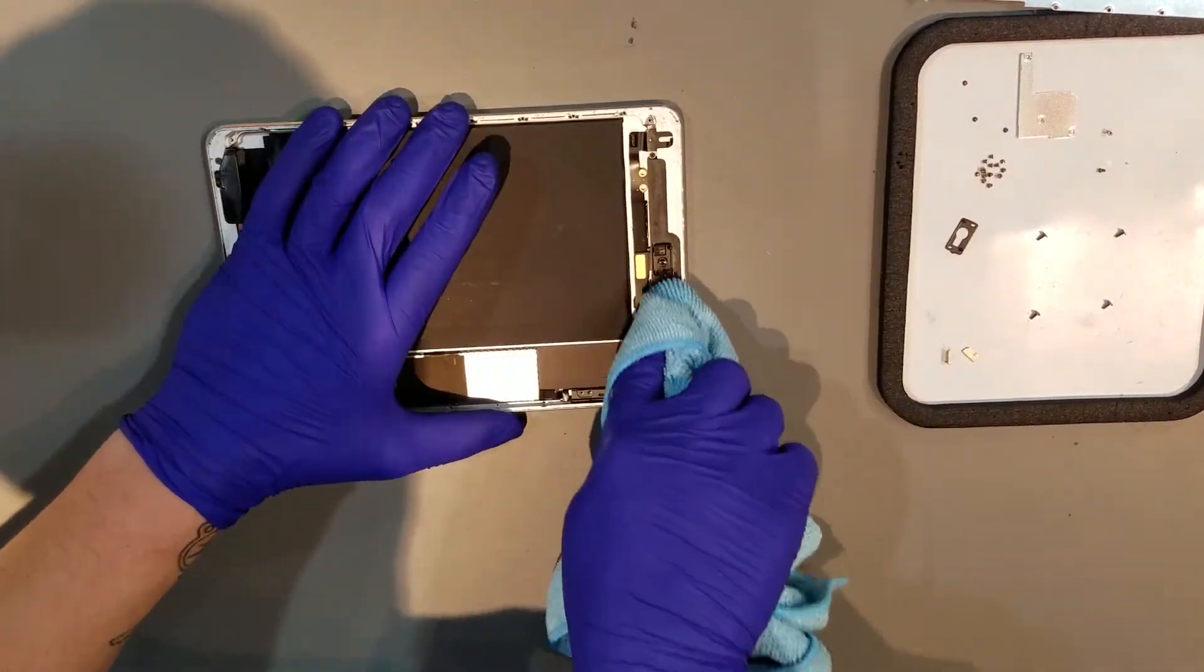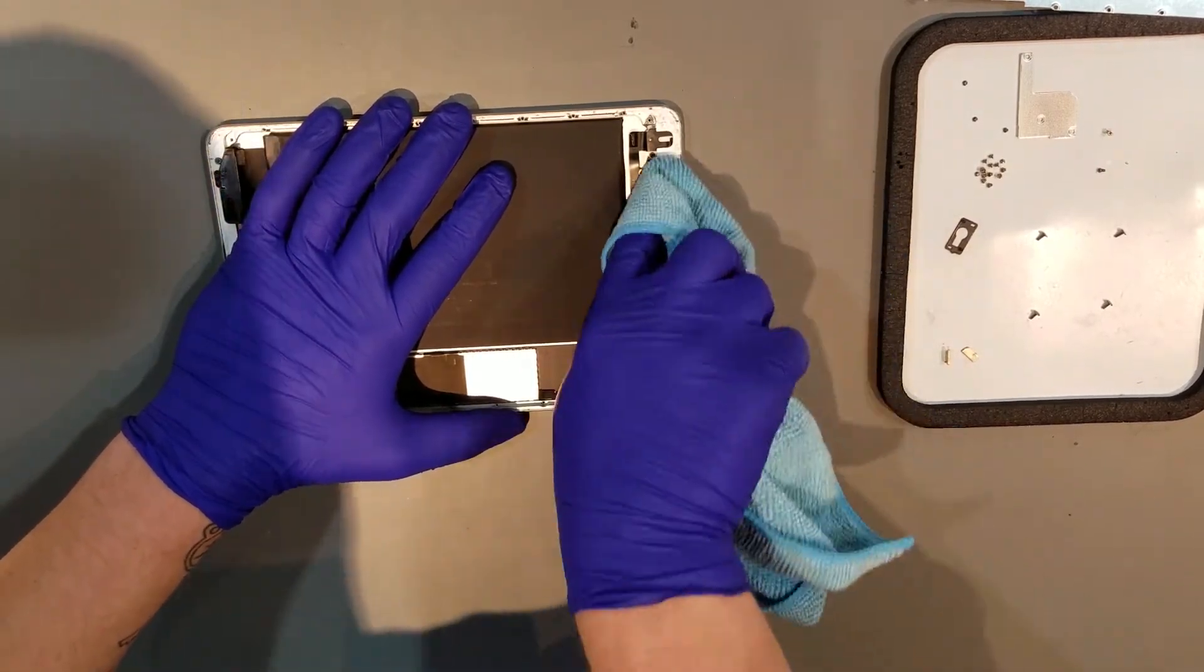When using isopropyl alcohol, you'll want to be careful as it can damage flex cables and internal components.